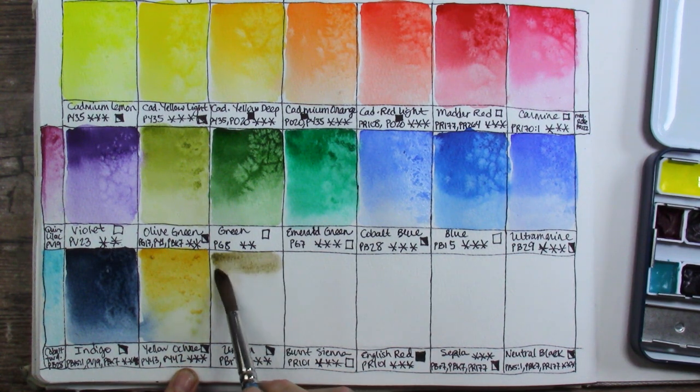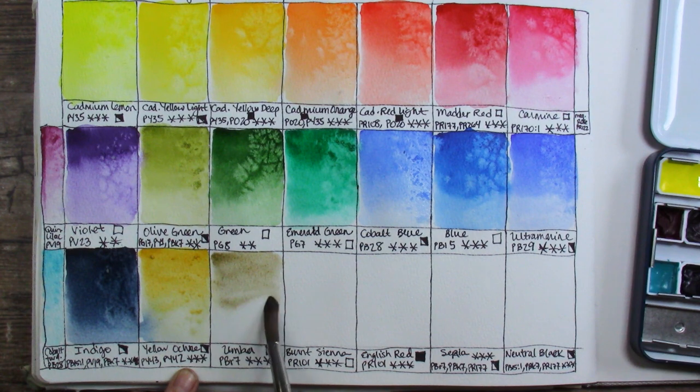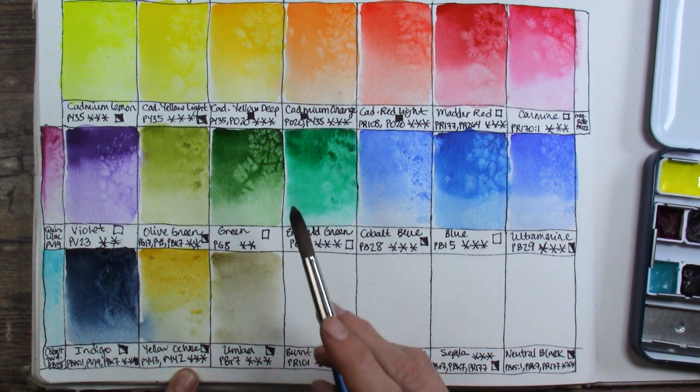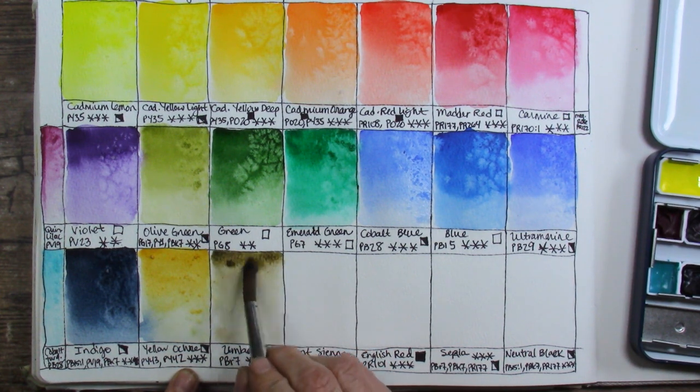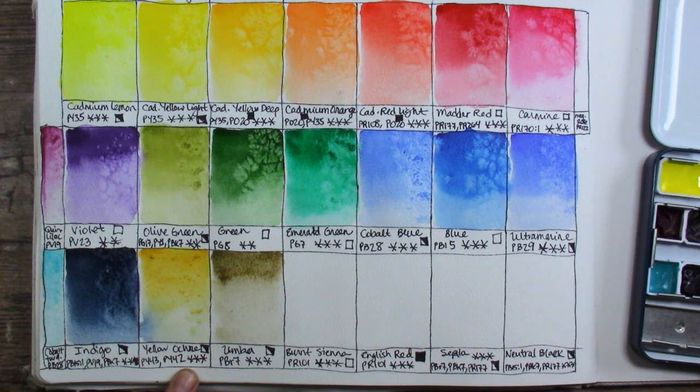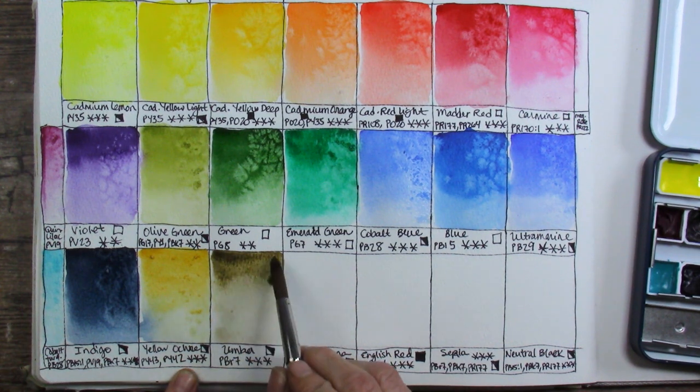Umber. PBR7. Three star lightfast rating and semi-opaque. I had trouble getting some of the color out on that one too but I was using these dry. I wasn't pre-wetting them at all. So not too bad. And then you can see when I just go back with my brush after the water got on it the first time. Just fine.